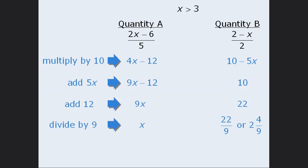So which quantity is bigger here? Well, since we're told that X is greater than 3, we can be certain that X is greater than 2 and 4 ninths, which means the correct answer here is A.